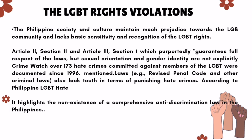LGBT rights violations: Philippine society and culture maintained much prejudice towards the LGBT community and lacked basic sensitivity and recognition of LGBT rights. Articles 2, Section 11 and Article 3, Section 1 purportedly guarantee full respect of the laws, but sexual orientation and gender identity are not explicitly protected. Over 173 hate crimes committed against members of the LGBT were documented since 1996. The Revised Penal Code and other criminal laws also lacked teeth in terms of punishing hate crimes.